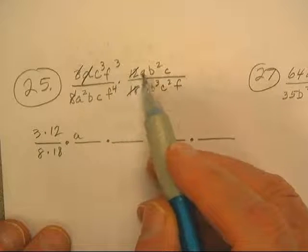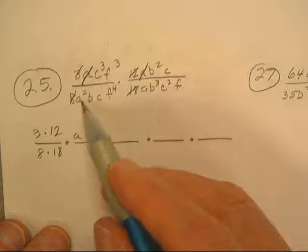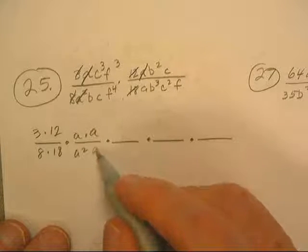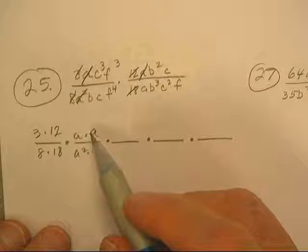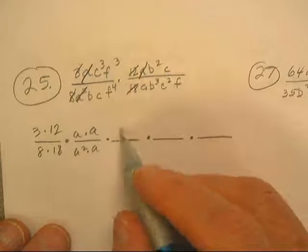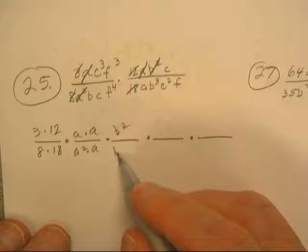to the first, and there's another a right there. Here's an a squared and here's an a. Okay, let's do B. No B, no B. B squared, the only one in the top. I've got a B in the bottom